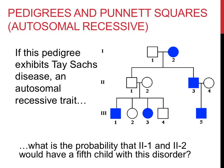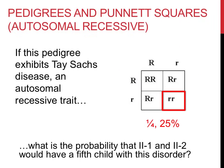The final question asks: what is the probability that Roman numeral 2-1 and 2-2 would have a fifth child with this disorder? Identify the individuals in question. Looking at their parents or children, you can figure out their genotypes, then cross the two individuals using a Punnett square to determine the probability. Both of these parents must be heterozygous, since neither has this recessive disorder but their children can get it. If you cross two heterozygous individuals for a given trait, there is a 25% chance that a child would be homozygous recessive and end up with the disorder.